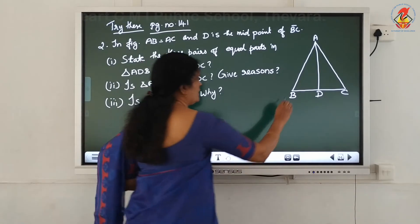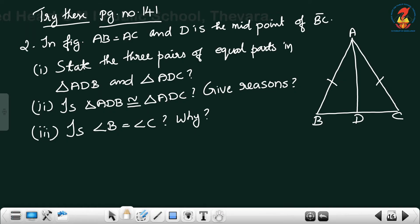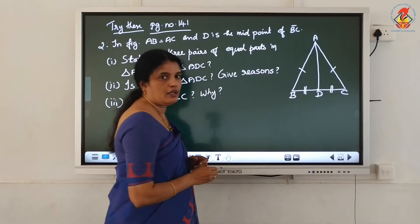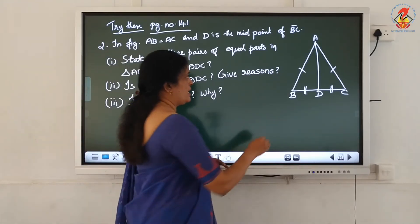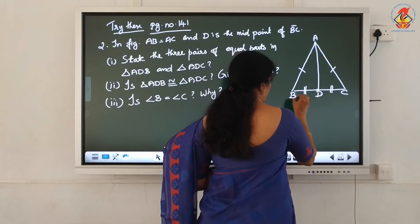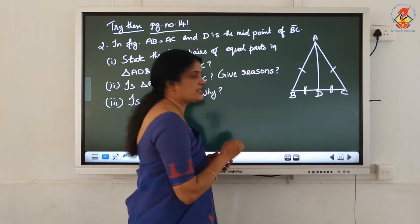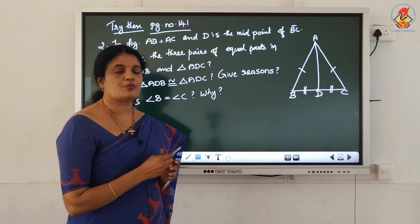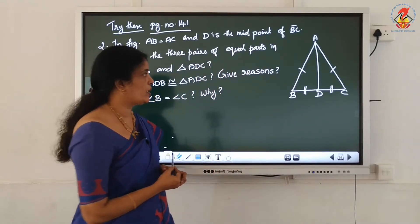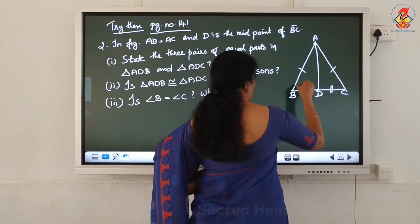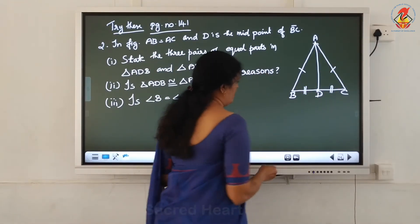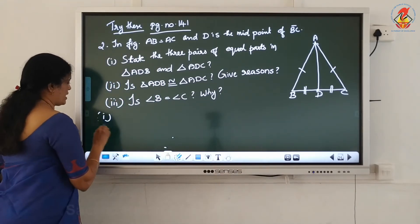AB equal to AC - these 2 sides are equal. D is the midpoint of BC. D is the midpoint of BC means BD and DC are also equal - D is the midpoint of BC. Can you see the 2 triangles in this figure? Yes - triangle ADB and triangle ADC. Consider those 2 triangles. You should write the corresponding parts. What are the corresponding parts already given in the question? AB equal to AC - write that first.